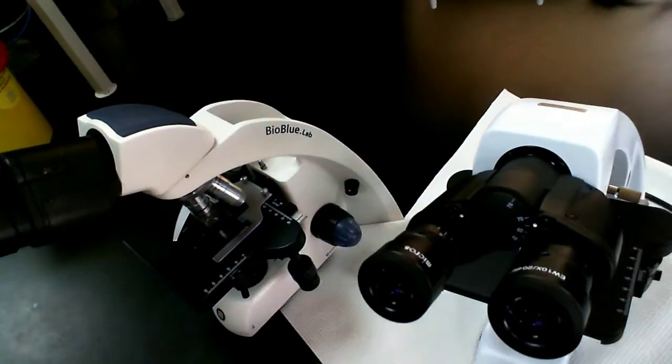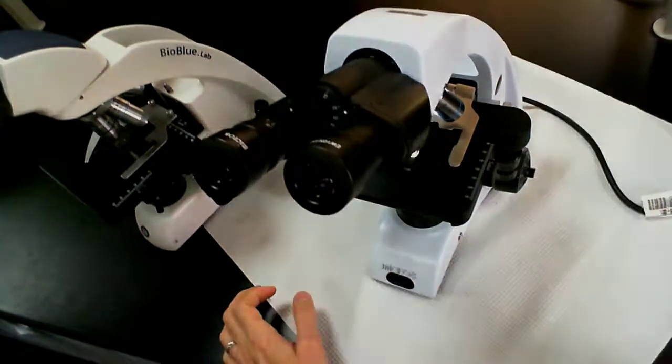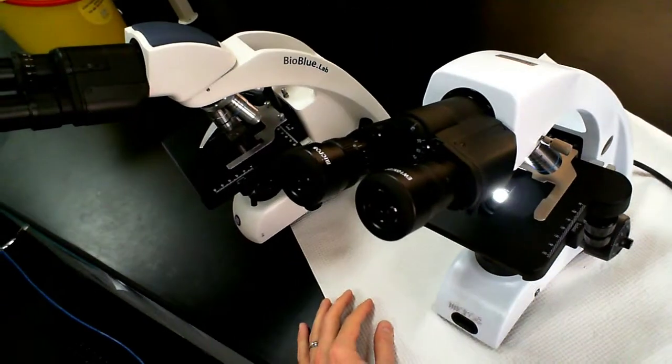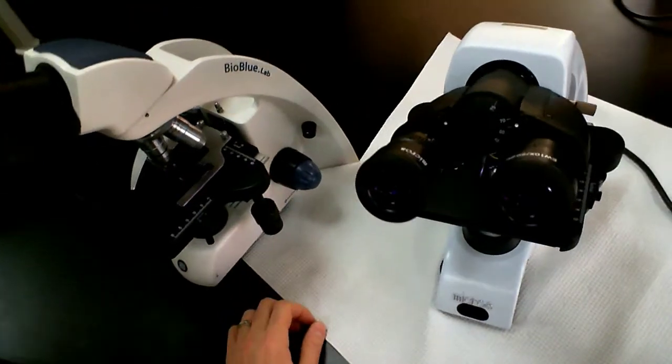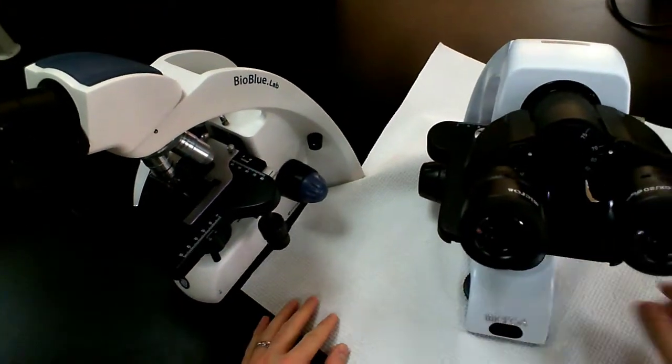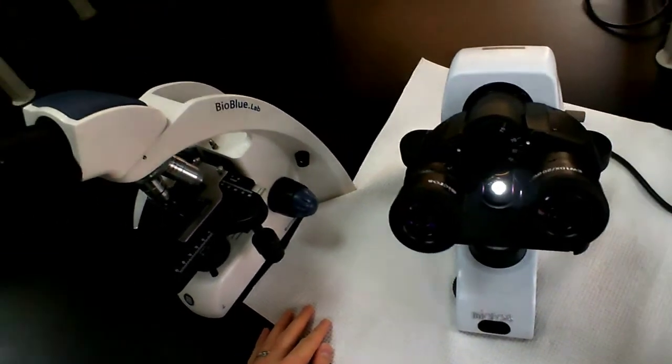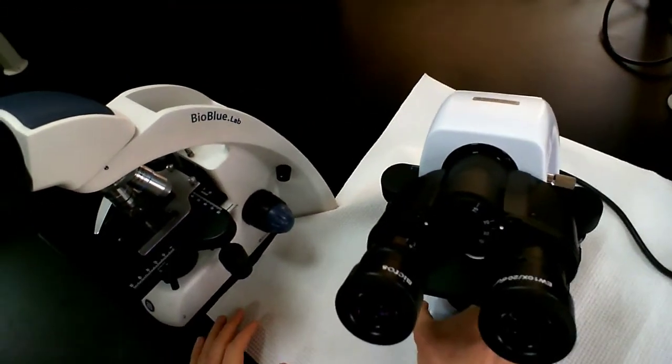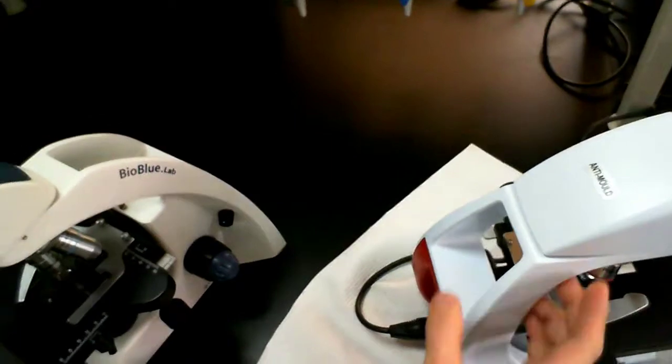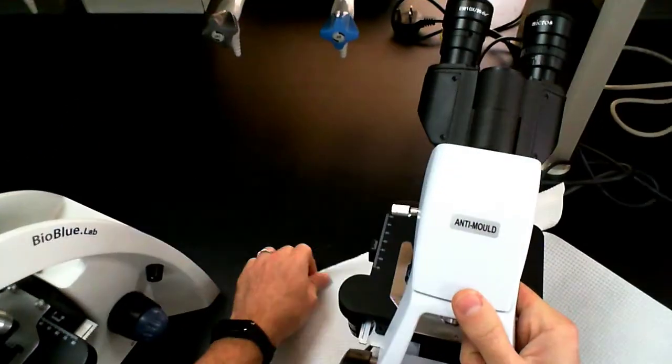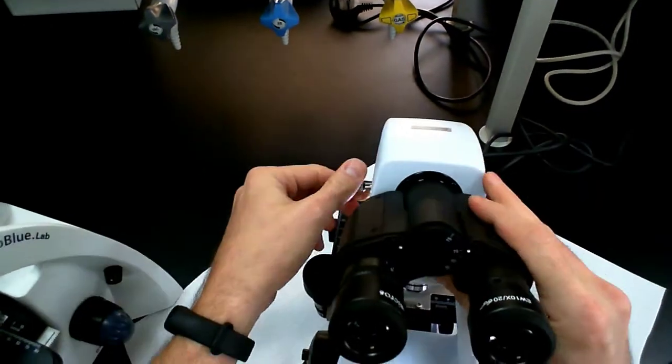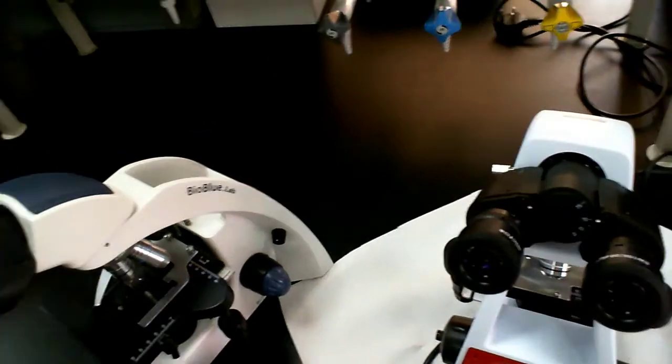So I think that covers just about everything that we need to worry about with these microscopes. Now, you might say, okay, you're right-handed, so maybe having the stage controls on your right hand works for you. But I'm left-handed, so what do I do? Well, it's a pretty simple solution, actually. Turn the microscope around, and just loosen this screw here, move the head around to the other side, and now you can use your left hand to control the stage controls.